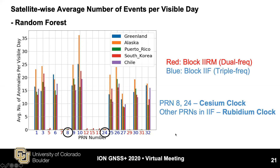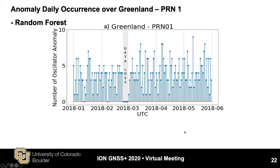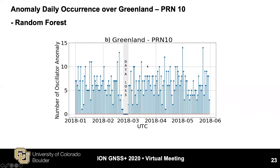On average, more than 35 events are detected from PRN10 at Alaska. We also want to know if the occurrence of anomalies is periodic or random. The plot shows the anomaly daily occurrence over Greenland for PRN1 — a random occurrence pattern is observed, with sometimes one anomaly per day and other days more than five. The same is found for PRN10, where some days show one anomaly and others show more than 10 anomalies per day.